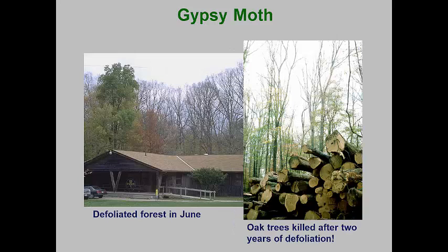The gypsy moth rarely causes tree death in urban landscapes where there are younger trees. Mature trees, especially older oaks, can only tolerate one to two years of defoliation. When this happens, especially during a hot and dry summer, these large trees run out of resources needed to refoliate and make energy to survive into the next season. In urban landscapes, we often recommend watering and lightly fertilizing defoliated trees so that they can set out new leaves and generate sugars to help them survive.